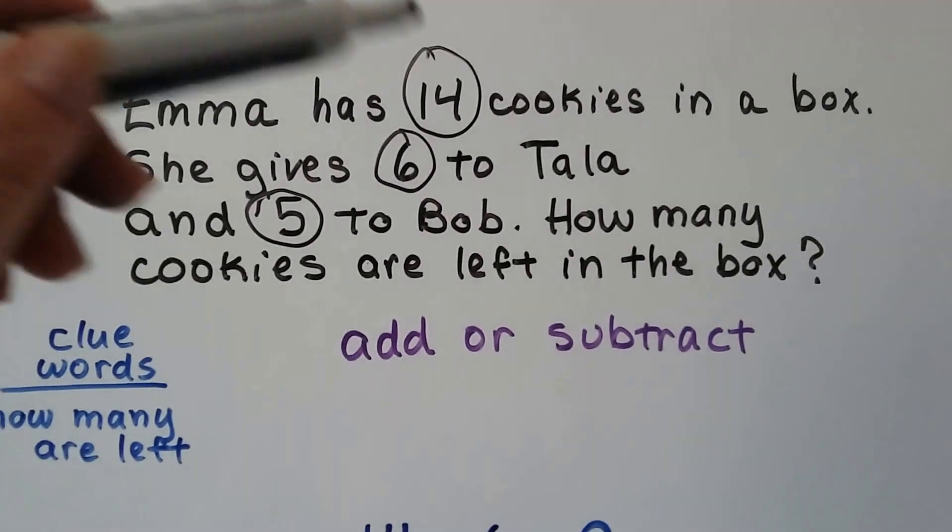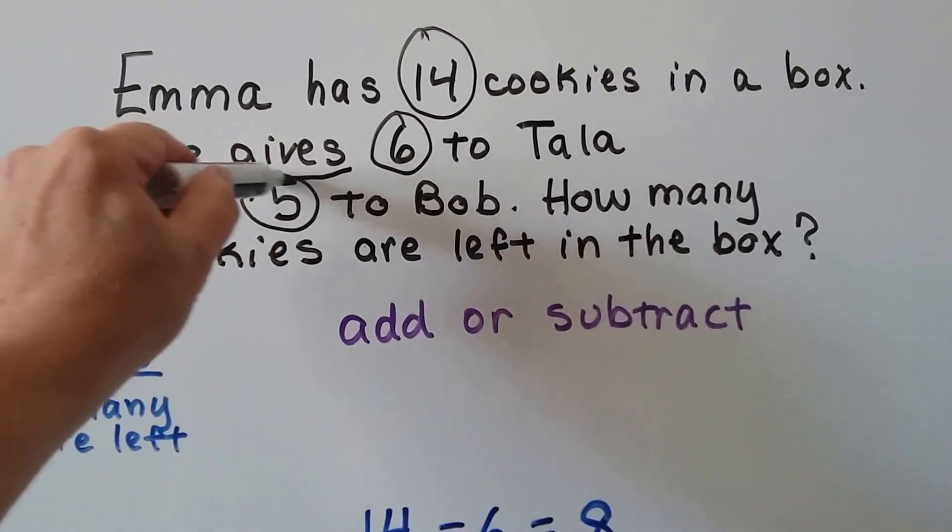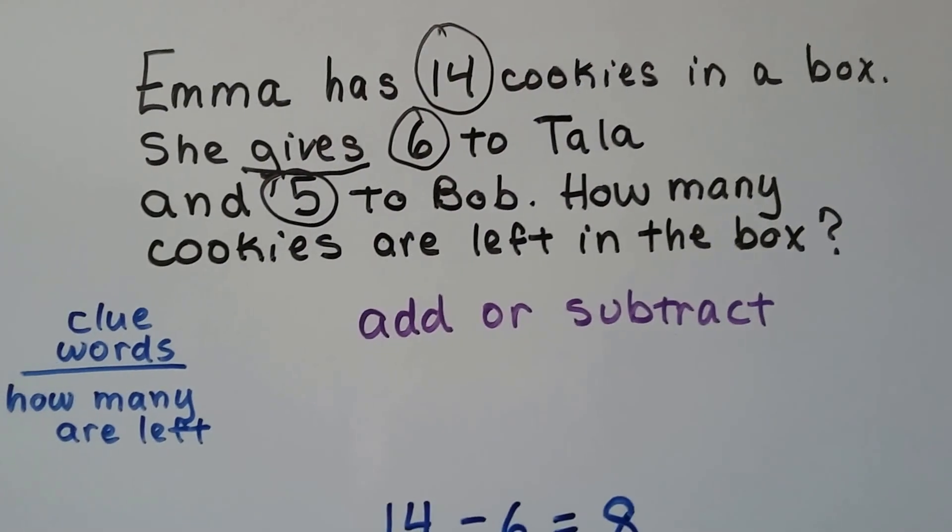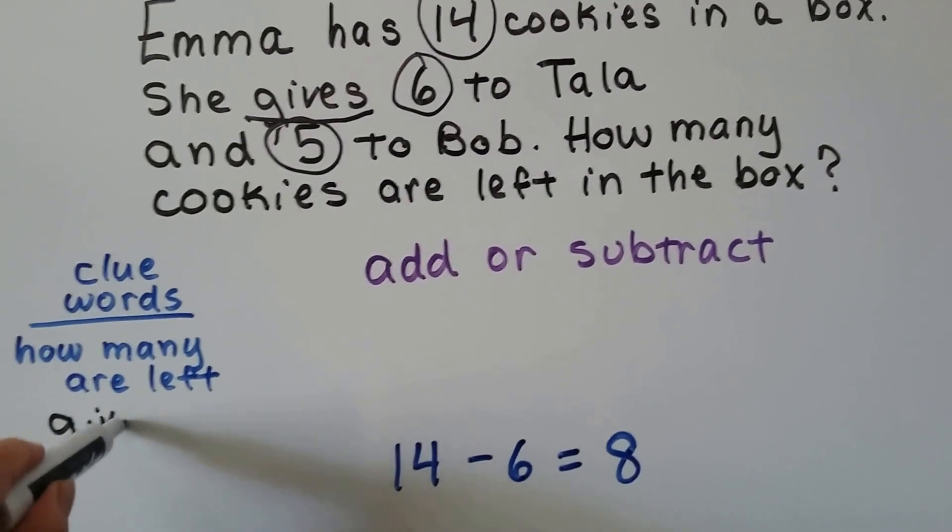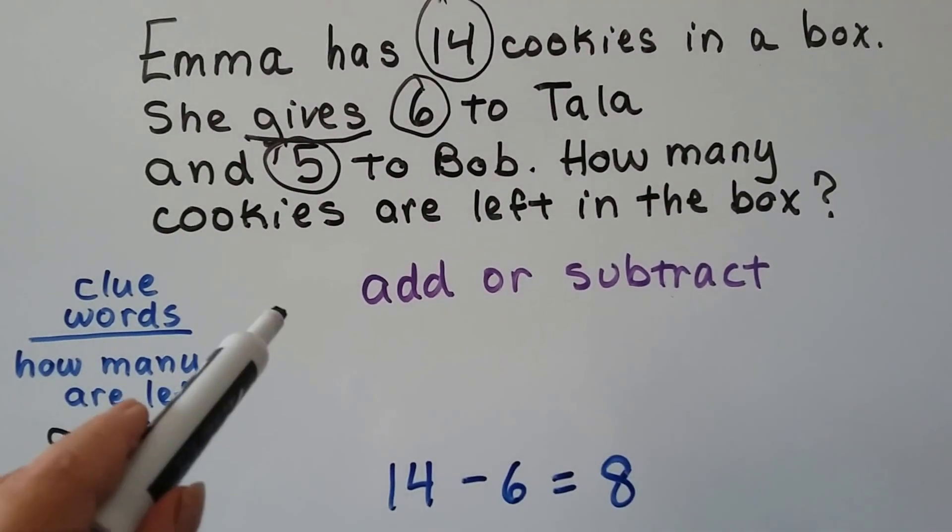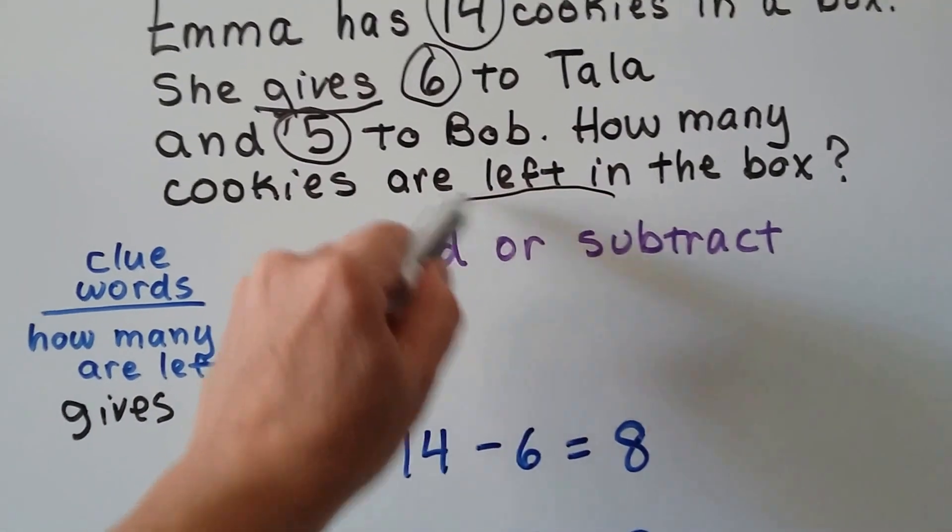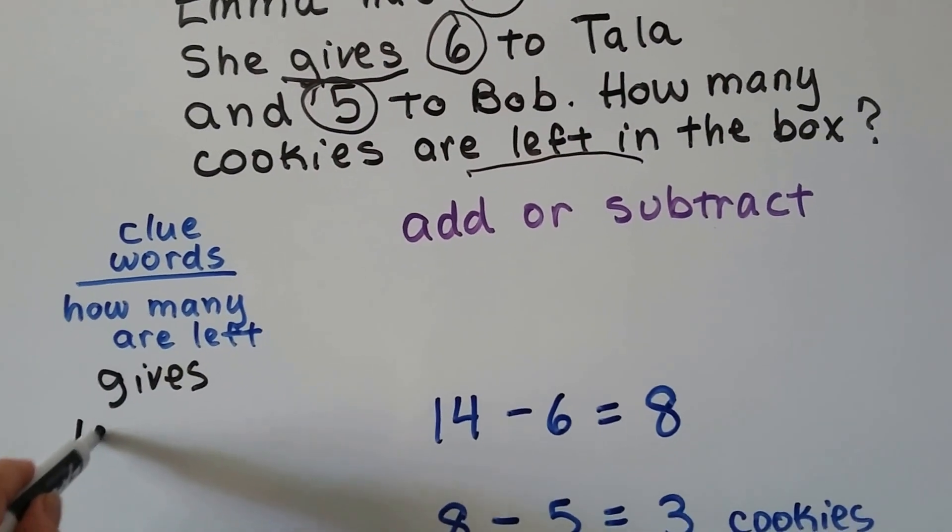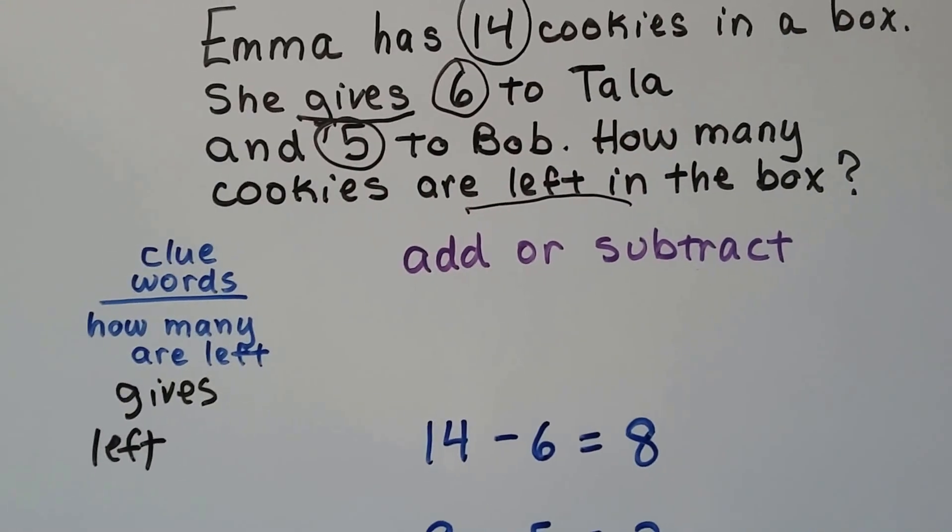We look for clue words. We know she had 14, she gives six to Tala. So that should be a clue word. And five to Bob. How many cookies are left? How many are left? So left is a good clue word. That means we have to find how many are left over.